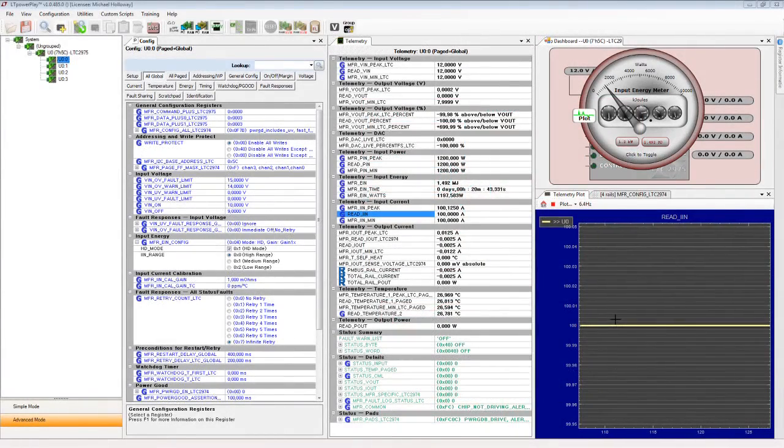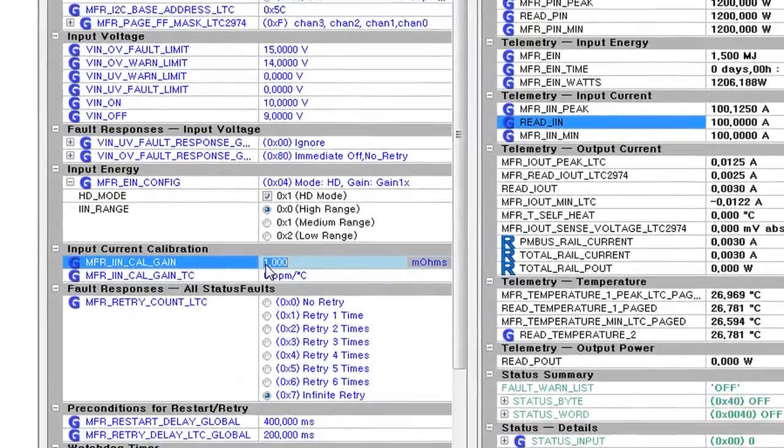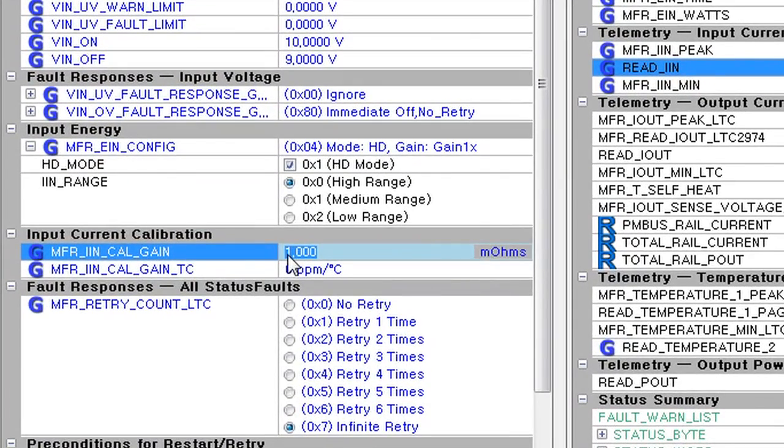To calibrate the LTC2975 current reading for easy comparison to the DMM's voltage reading, we set MFRI_IN_CALGAIN to 1 milliohm. The LTC2975 now reports input current with 1 amp of input current telemetry equal to 1 millivolt of input voltage.